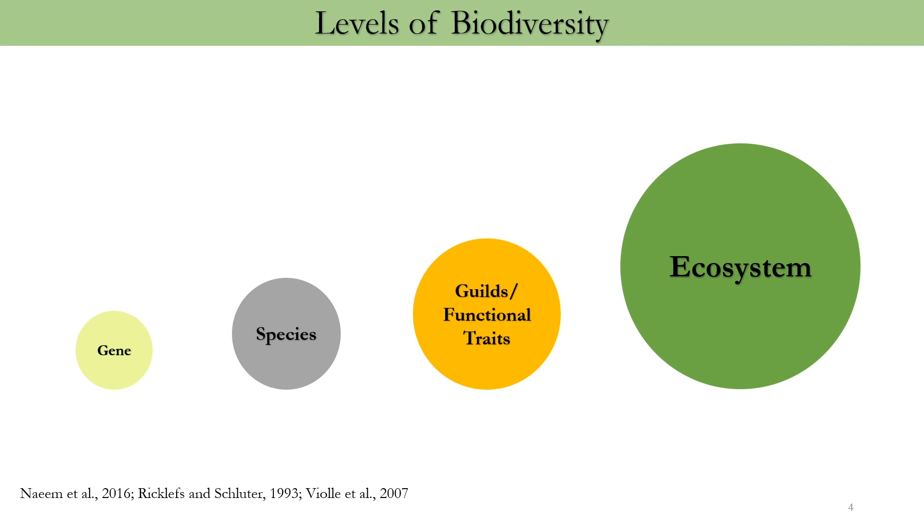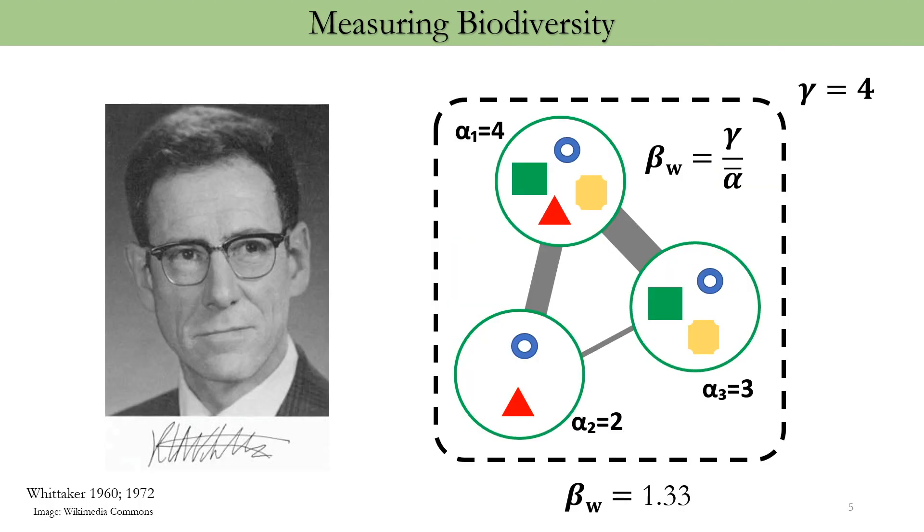One of the major challenges in studying biodiversity is how to measure it. And one of the first and still widely used matrices was introduced by Whittaker in 1960. Whittaker proposed three measures: alpha to measure number of species at any given site, gamma to measure number of species in a broad region, and beta to measure the extent by which species richness of a region is greater than the average species richness of a site or a collection of sites.